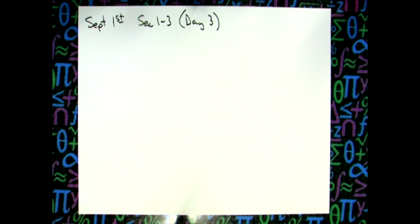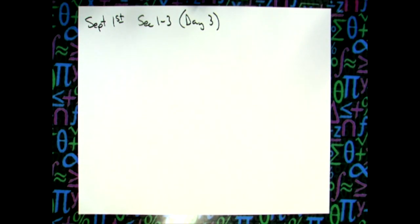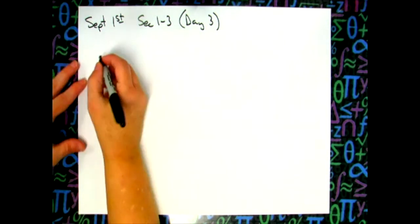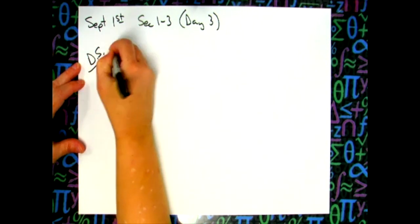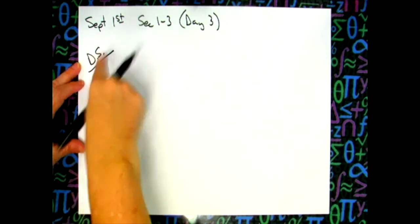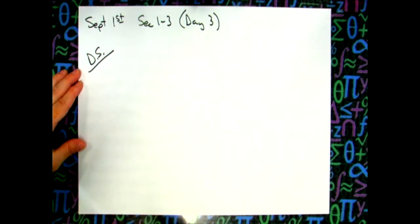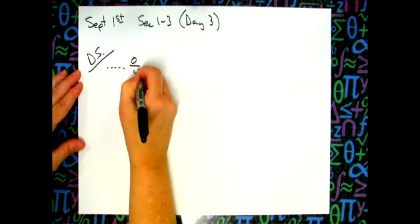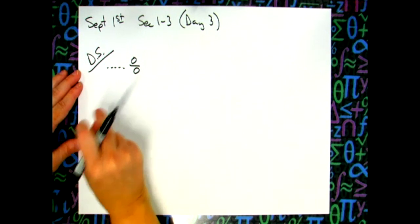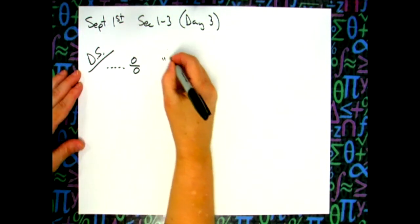Remember the other day when we were playing with the graphing calculator and we messed with things — we did a direct substitution, plugged things in, and got zero over zero. You can't do zero over zero; that is considered to be an indeterminate form. So let's say you do a direct substitution in your limit — I've been writing 'DS' every time I do that — and you get zero over zero. This is going to be our first indeterminate form.